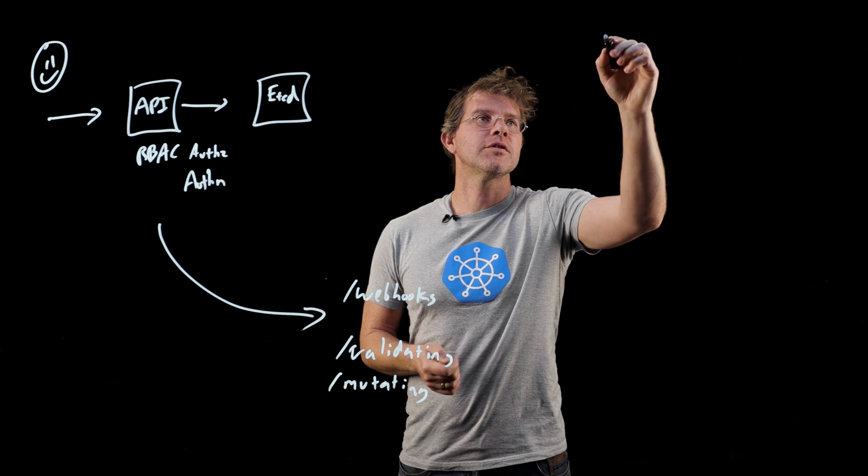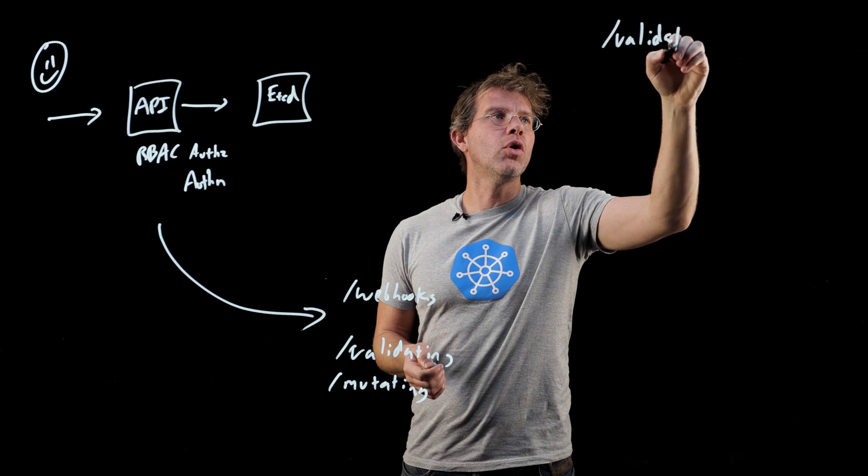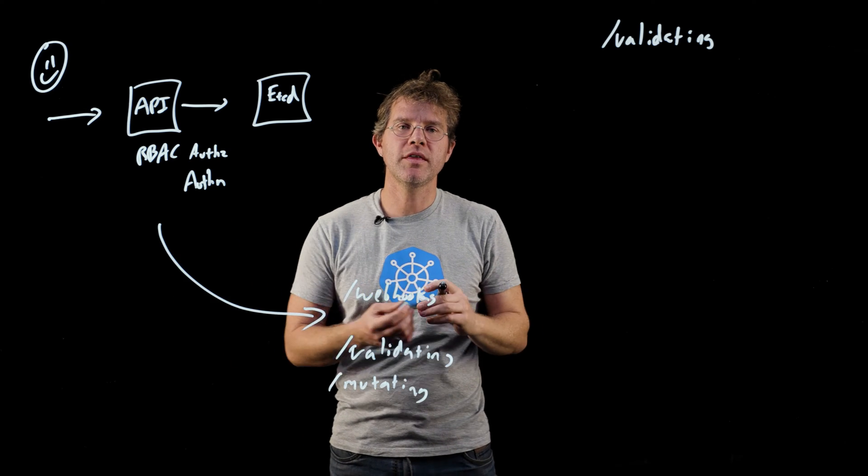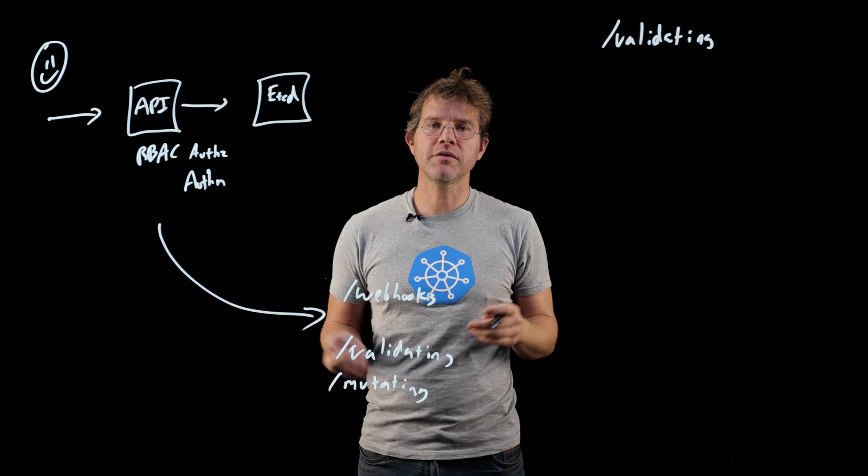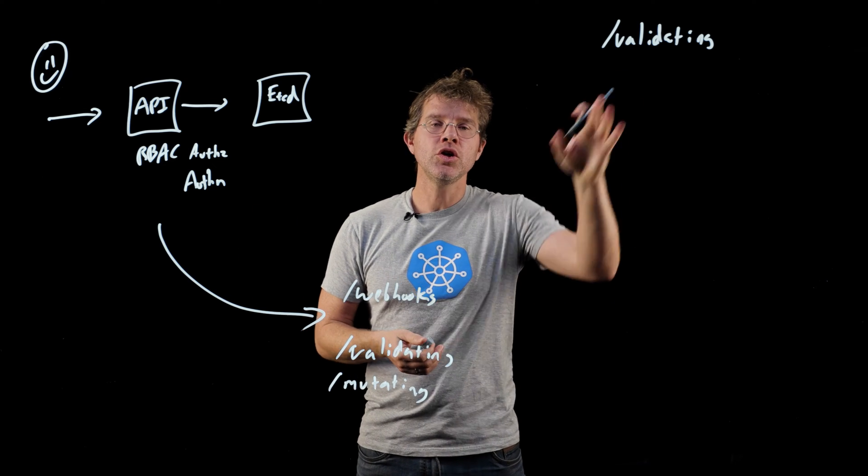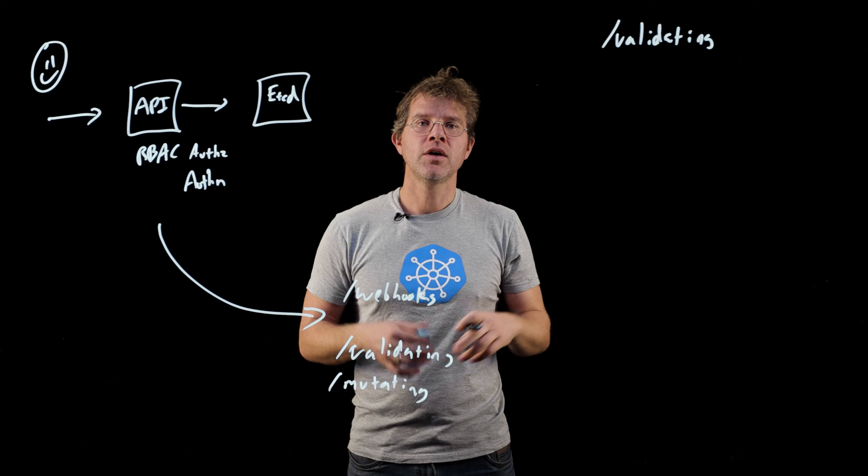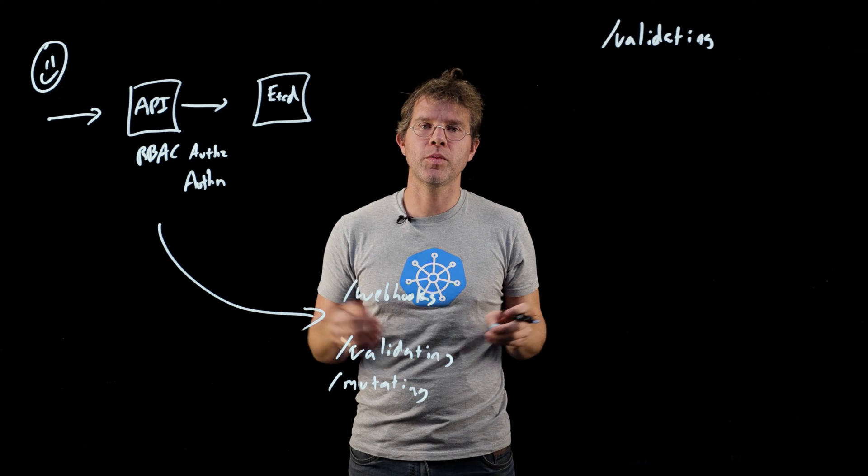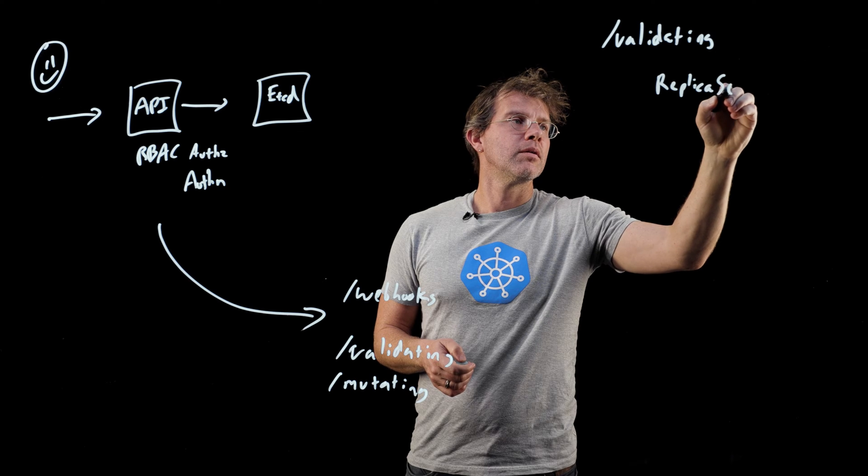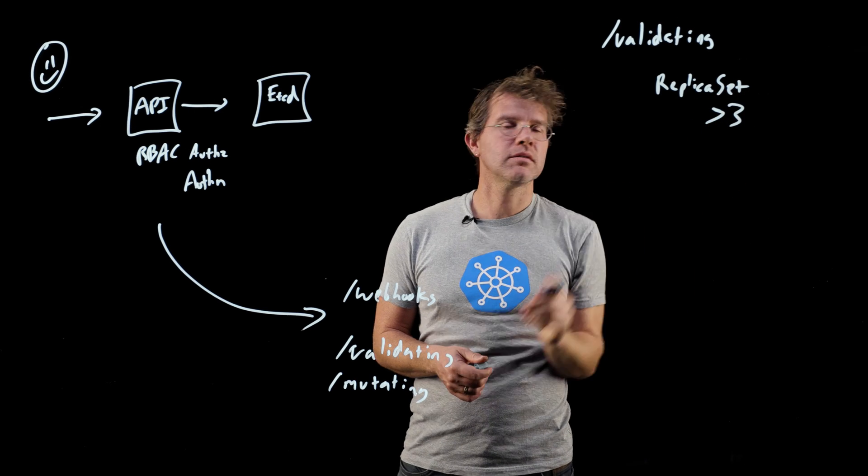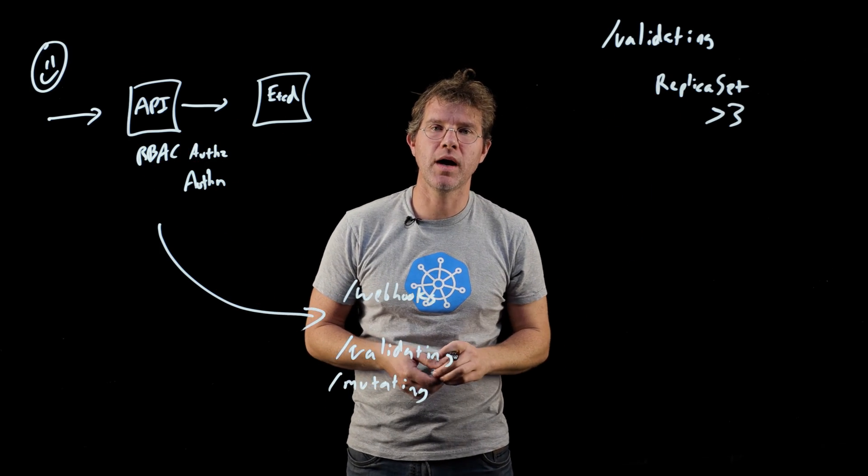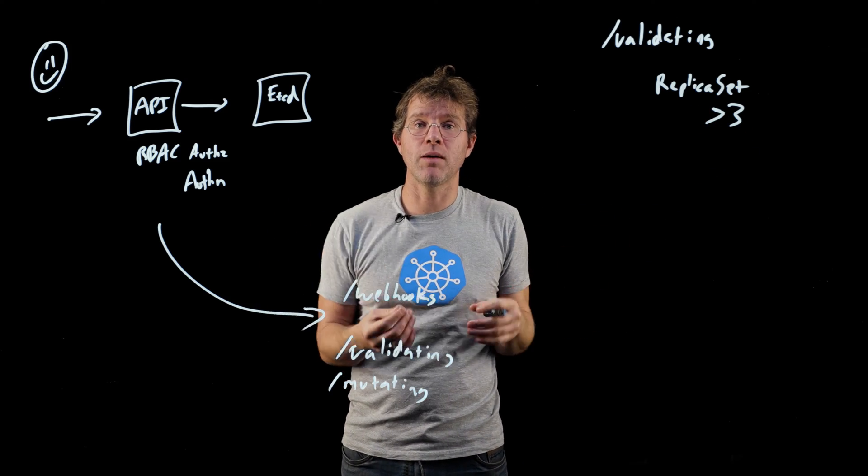Let's take a look at validating admission controllers first. With a validating admission controller, the goal is to ensure some sort of property for an object is maintained. And generally when we think about this, we think about this in terms of something like policy. As a concrete example, the gatekeeper open source project that's maintained by Azure and others to build policy for Kubernetes, uses a validating admission controller to integrate itself into Kubernetes. Using a policy engine like Rego from the open policy agent folks, you can actually say things like, I want every replica set must have at least three replicas. That's something that you can't express with authorization or authentication, but it is something that you can express with policy.